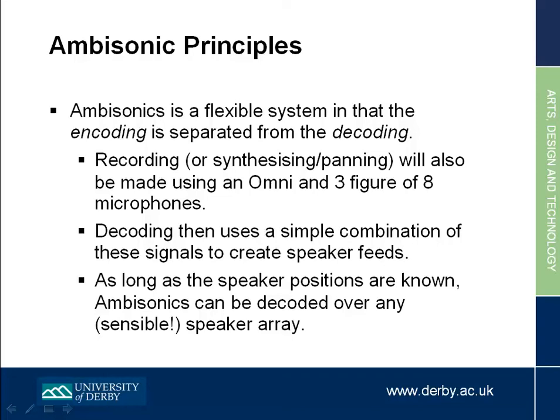The pieces you heard on the way in are pieces from past assignments in this module — second-year students doing Computer Music Systems. I'll show you another one or two at the end. So as long as I know where the speaker positions are, I can make a decoder for them. You'll be using these 24 speakers to render your audio. But once you've mixed it for these 24 speakers, you could just change the switch on the decoder and generate a 5.1 speaker version, a 4-speaker version, or a 64-speaker version, depending on where you want to present the piece.